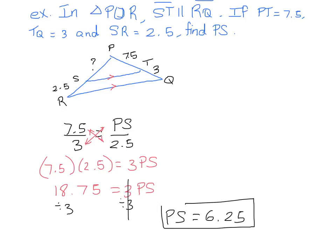In addition, it also works backwards. For example, if you were given the side lengths but weren't told that these two lines were parallel, you could test to see if the two pairs are proportional. And if they are proportional, then you could prove that this line is parallel to this line. That's just a different way you could play with a question like this.